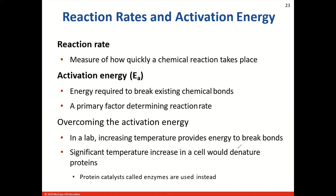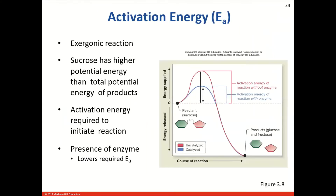This energy required is the primary factor in determining the reaction rate. By utilizing an enzyme we're actually able to overcome the activation energy requirement. In a lab we can increase temperature, and by increasing temperature it provides additional energy to break bonds — if you've taken chemistry, you know we add heat to speed up reactions. However, a significant temperature increase in a cell would actually denature the proteins, so protein catalysts called enzymes are used instead.